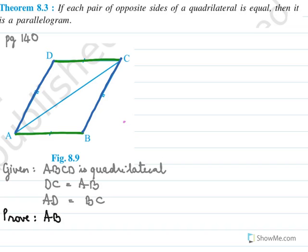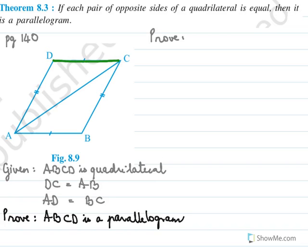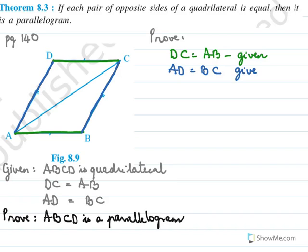We need to prove ABCD is a parallelogram. To prove any quadrilateral is a parallelogram, we need to prove opposite sides are parallel, and to prove any two lines are parallel, we have to show alternate angles are equal. We know DC equals AB and AD equals BC, both given, and AC is common. So the two triangles are congruent by SSS test.